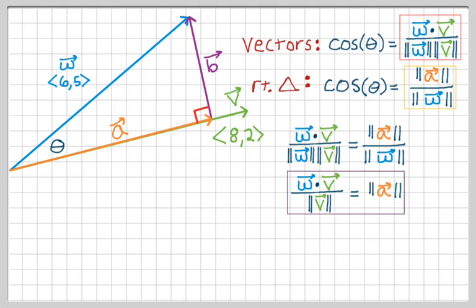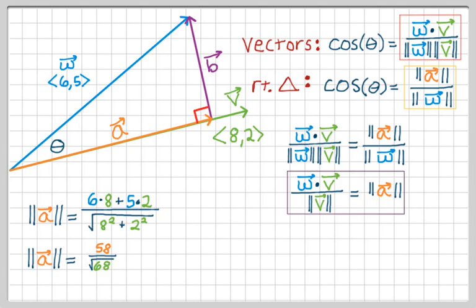So now I actually, if I wanted to, I could calculate the magnitude of a. So I'm going to do that. So the dot product of w and v is going to be 6 times 8 plus 5 times 2 over the magnitude of v, which is the square root of 8 squared plus 2 squared. And that's going to clean up to give me 58 over √68. Okay, so now I know the magnitude of a. So let's see what else we can do.